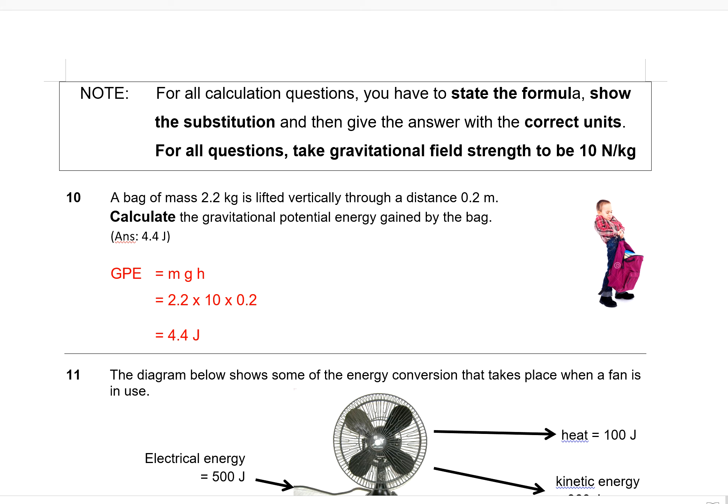Hello everyone, let's continue with the worksheet on work and energy. I'm now at the part on energy part 1 and question 10. These are all calculation questions, so do remember for each calculation question to state your formula, show the substitution, and finally give your answer with the correct units. For all questions that need the value of G, gravitational field strength, it is 10 newtons per kilogram because we assume all these questions take place on Earth. So let's begin.